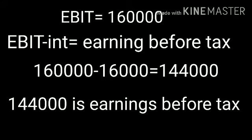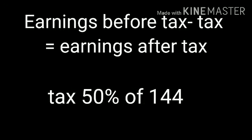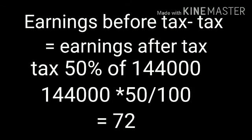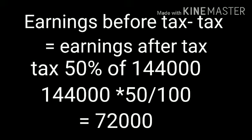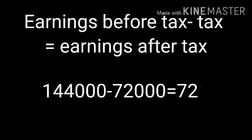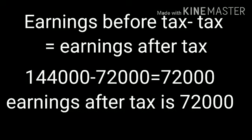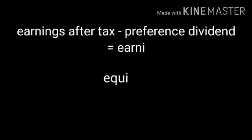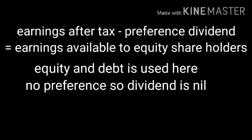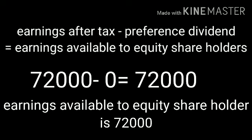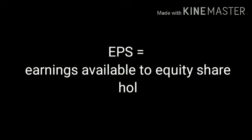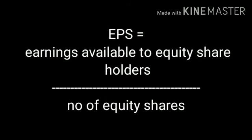Step 2 for Plan B: deduct tax. Tax rate is 50% of earnings. Earnings before tax is 1 lakh 44,000, so tax = 1 lakh 44,000 × 50/100 = 72,000. Earnings after taxes = 1 lakh 44,000 minus 72,000 = 72,000. Step 3: deduct preference dividend — no preference shares are used in Plan B, so preference dividend is nil. Earnings available for equity shareholders = 72,000. Next step is calculation of EPS: earnings available divided by number of equity shares.